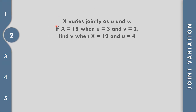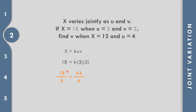In example number two, x varies jointly as u and v, so x equals k times u times v. If x equals 18 when u equals 3 and v equals 2, we substitute: 18 equals k times 3 times 2, which gives 18 equals 6k. Dividing both sides by 6, we get k equals 3.